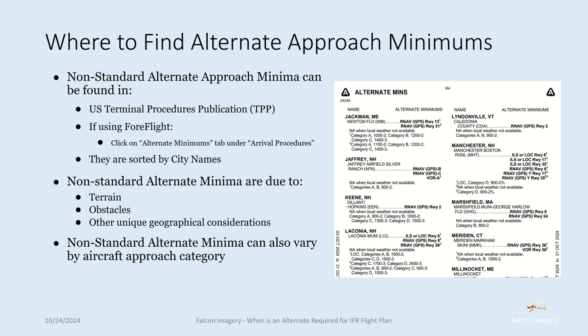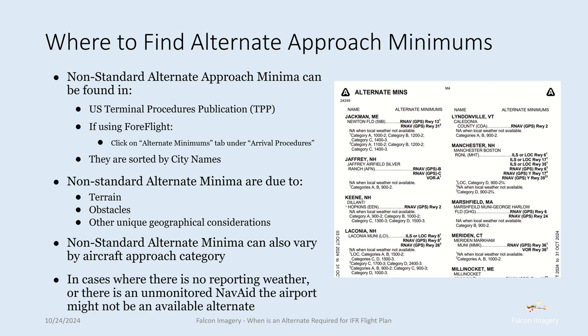Non-standard alternate minimums can also vary by aircraft approach category. In some cases where there's no reporting weather or there's an unmonitored nav aid, the airport itself might not even be available as an alternate airport to list in an IFR flight plan. So those are the basic requirements for when we need to include an alternate in our IFR flight plan. Hopefully you found this video useful — if you did, consider hitting the like button and subscribe to the channel so you get notified on my next video.